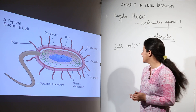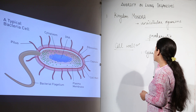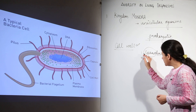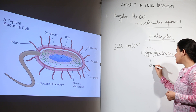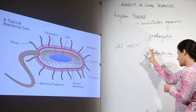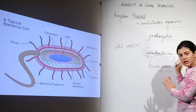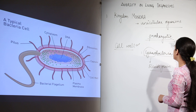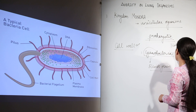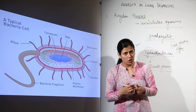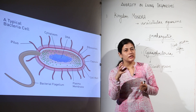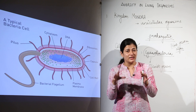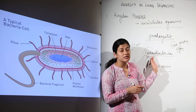This kingdom includes bacteria, and the second type is cyanobacteria. The word 'cyano' refers to the bluish-green color — so cyanobacteria are bluish-green bacteria. Another name for them, which is quite misleading, is blue-green algae. If you have ever seen a pond with a greenish algal bloom on the surface, that bloom is not actually algae — it is bacteria, specifically cyanobacteria.